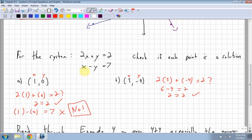But we have to check in both, remember. So x is 3. So I have 3 minus my y, which is negative 4. Be careful with the minus and the negative signs. Equals 7. 3 minus negative. That means plus. So 3 plus 4 equals 7. Yep. So yes.